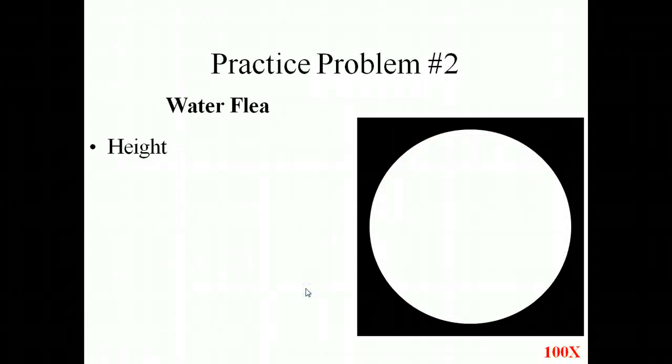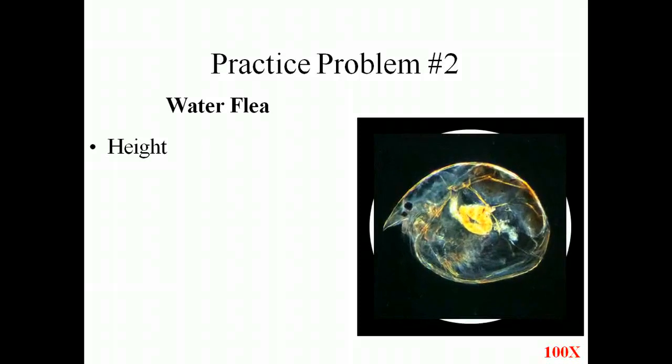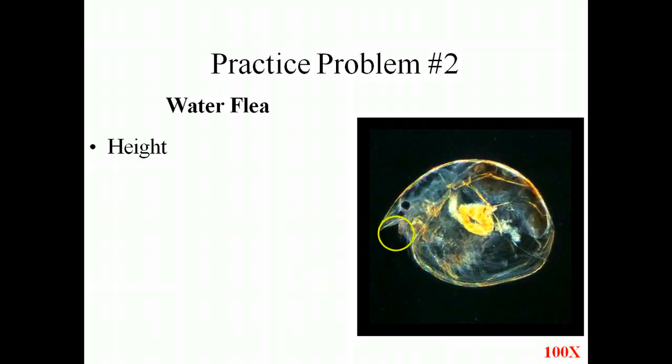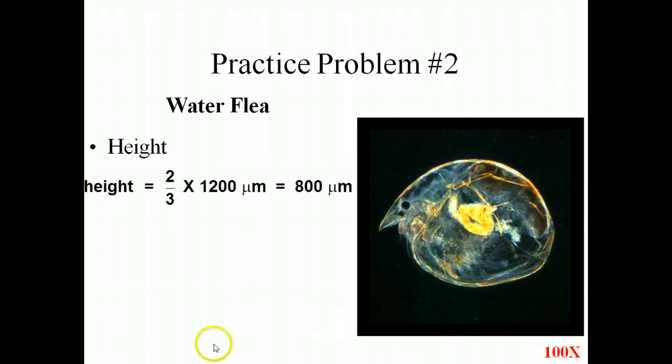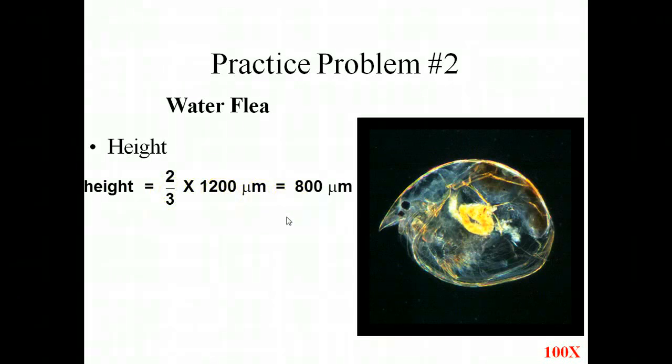Here is the water fleas. If we were to estimate the height of a water flea, height is going to be from the top to the bottom of this little flea. I would estimate that it takes up about two-thirds of my field of view. We're under low magnification, which is 1,200 micrometers. So two-thirds times 1,200 gives us an estimated size of 800 micrometers tall.